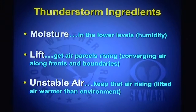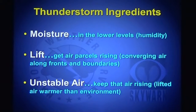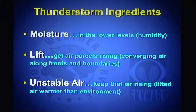There are basically three things we need to get thunderstorms: moisture, lift, and unstable air. Moisture, preferably in the low layers of the atmosphere — think of that as higher humidity. We need to lift that moist air to get those parcels of air rising. In North Dakota during the summer season, cold fronts provide the lift that we need. An unstable atmosphere will encourage those parcels to keep on rising until we get clouds to form and maybe even a thunderstorm.